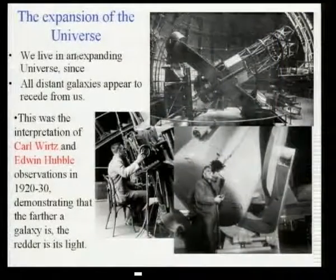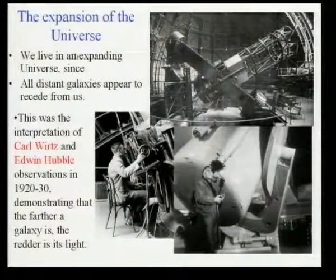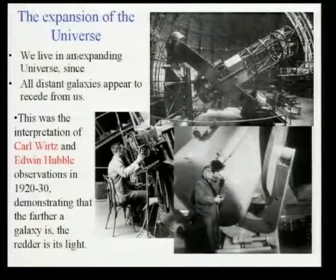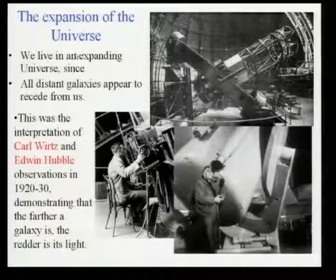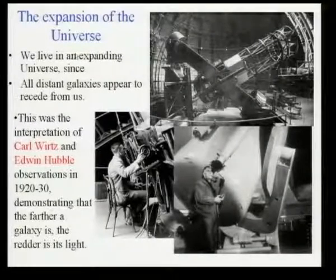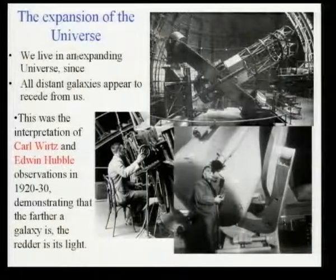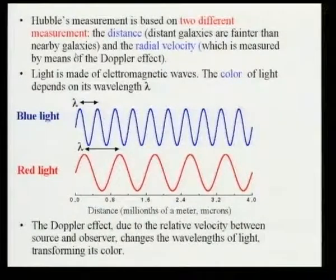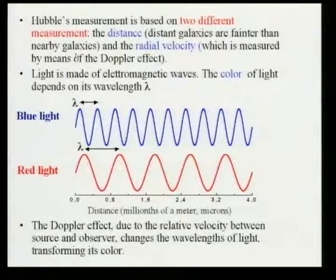The first evidence is that we live in an expanding universe, since all distant galaxies appear to recede from us. This was the interpretation of observations from Carl Wirtz first, and then Edwin Hubble, who demonstrated that the farther a galaxy is, the redder is the light we receive from it. This is based on two measurements: the measurement of distance, and the measurement of the color of characteristic lines emitted by the galaxy.